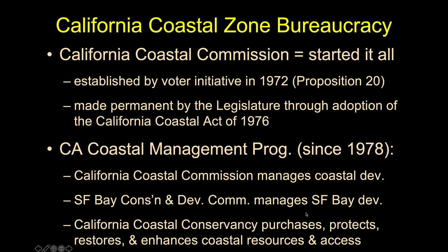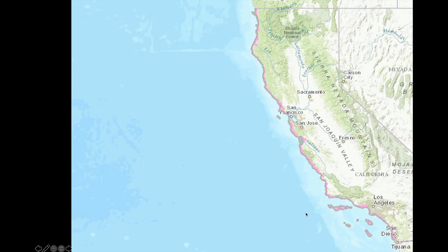The Coastal Commission and the California Coastal Management Program — in effect since 1978 — serve to purchase, protect, restore, enhance, and safeguard coastal access across the entirety of California, but only within the legally defined coastal zone. The legal definition includes a pink terrestrial side and a gray seaward side of mean higher high water, both regulated by the state of California.